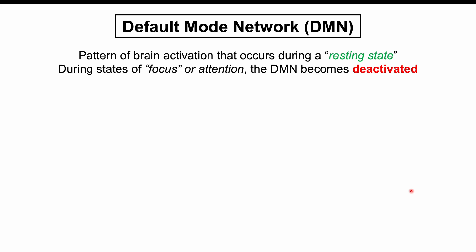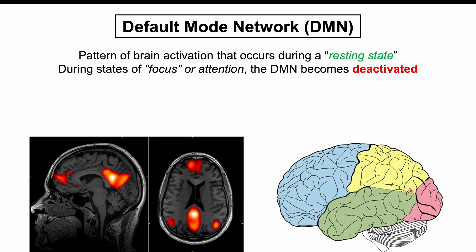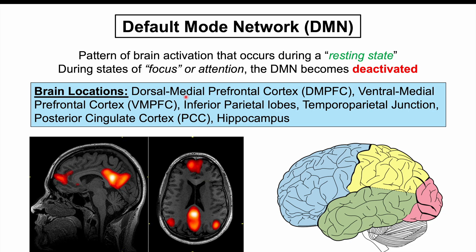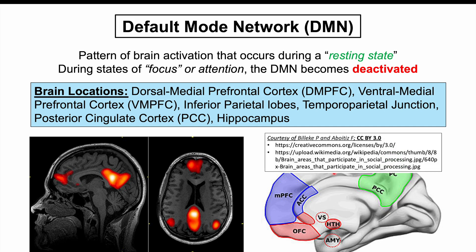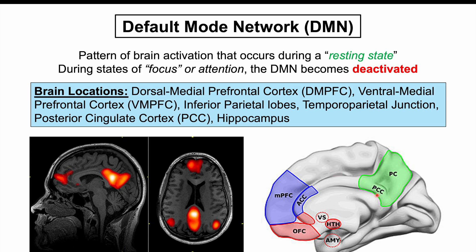When the default mode network is activated, particular structures in the brain become activated. These include the dorsal medial prefrontal cortex, in the frontal lobe; the ventral medial prefrontal cortex; the inferior parietal lobes; the temporoparietal junction, which is the junction between the temporal and parietal lobes; the posterior cingulate cortex, visible between the two hemispheres; and the hippocampus.